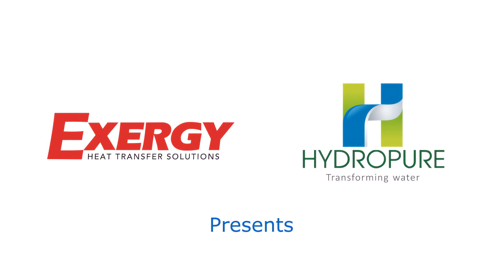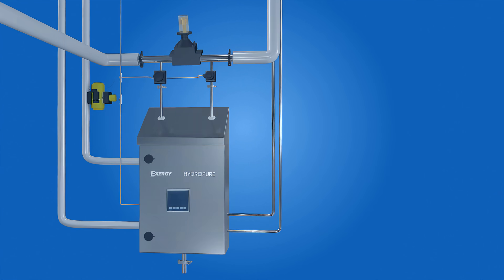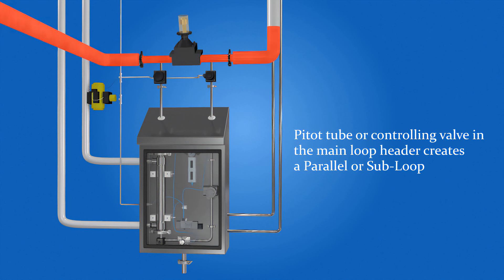Exergy and HydroPure collaboration presents an innovative and cost effective point of use system. Our point of use system has either a pitot tube or a controlling valve in the main loop header that diverts a continuous flow of hot water through the system, thereby creating a parallel flow or sub-loop.